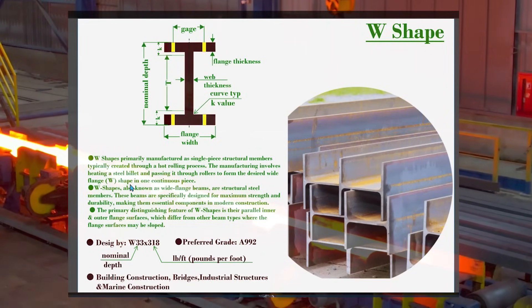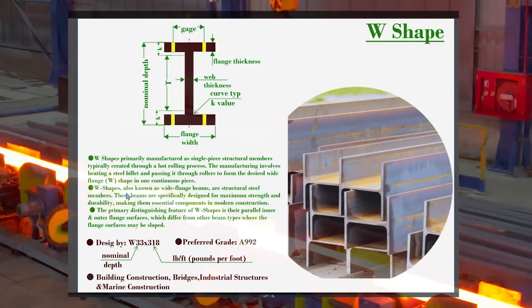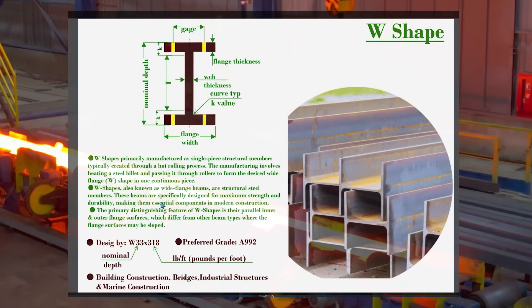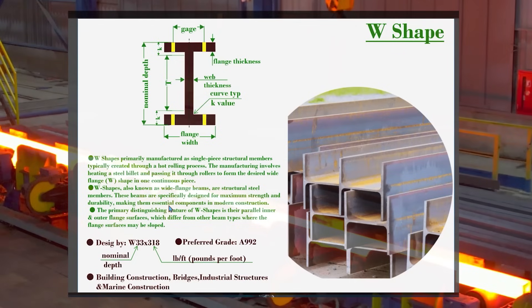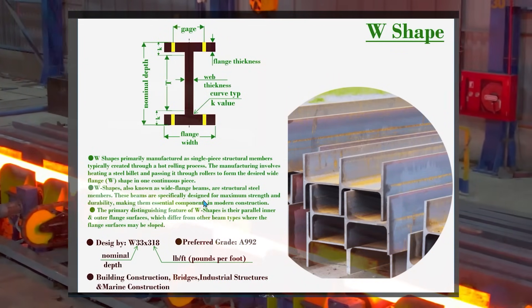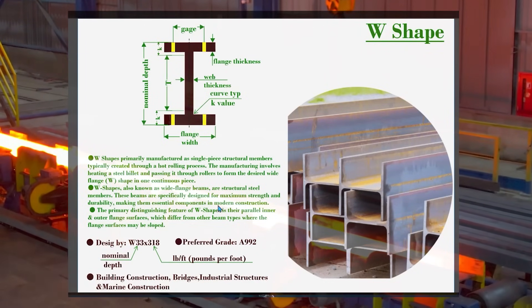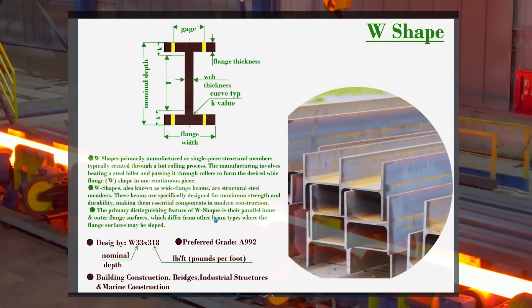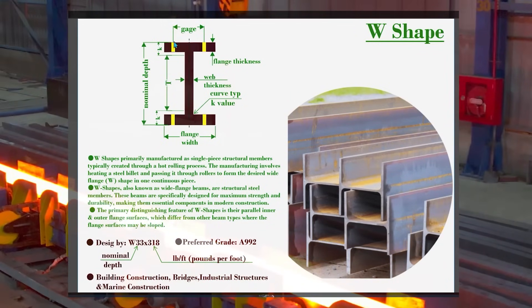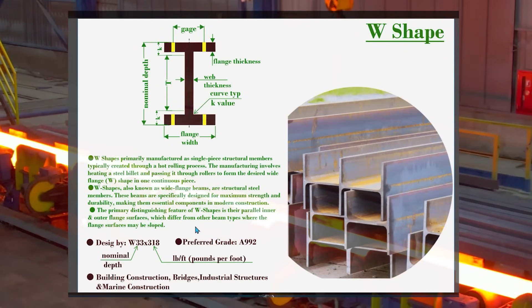The shape is wide flange in a continuous piece. These W shapes, also known as the wide flange beams, are structural steel members. These beams are specifically designed for maximum strength, durability, and are essential components in modern construction. Wide flange shapes have parallel inner and outer flange surfaces.